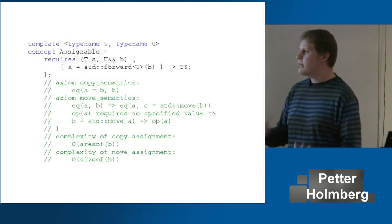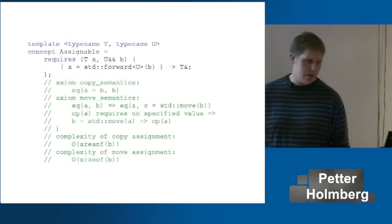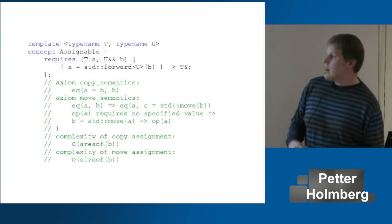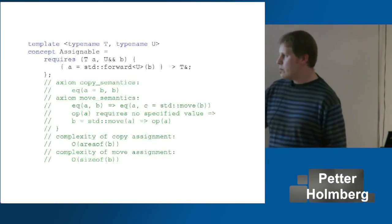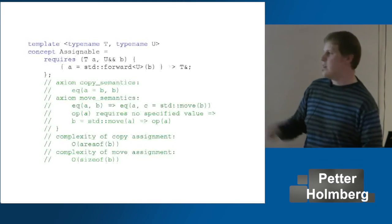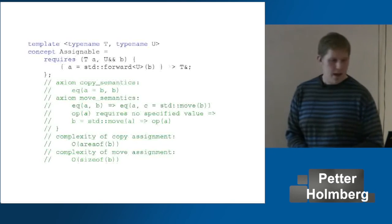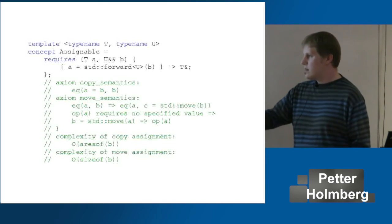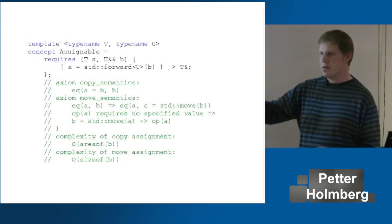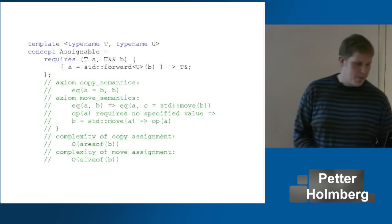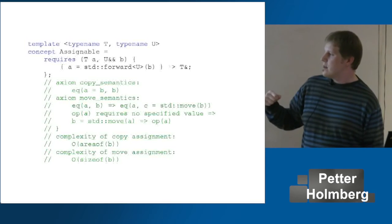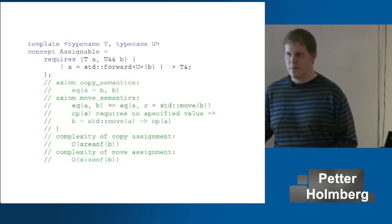Of course there are different semantics. We have copy semantics as before when we do a copy, and we have move semantics when we do a move. So if A and B are equal, we could move B out into some third object C — then A and C are still equal, even if B has changed. And if we have an operation that doesn't have any preconditions on the value, we can move out an object and still use that operation. Complexity: copy assignment is linear in `area_of`, and move assignment is linear in `size_of` the object.